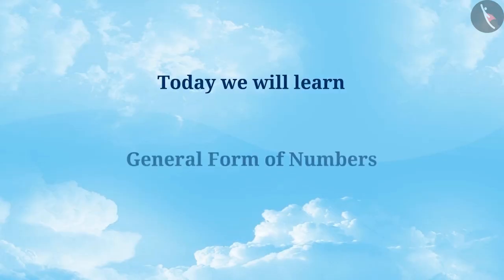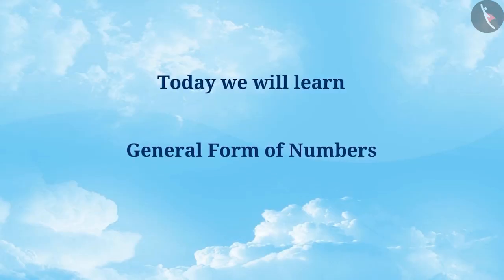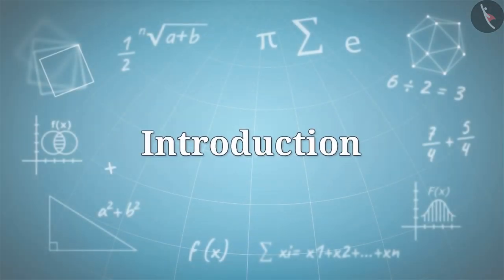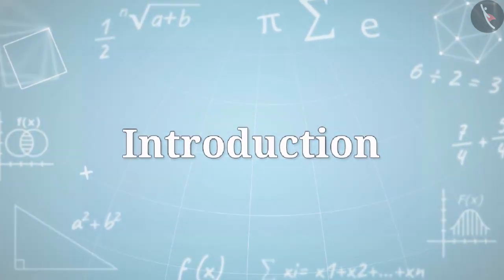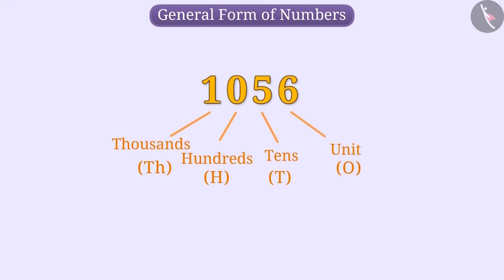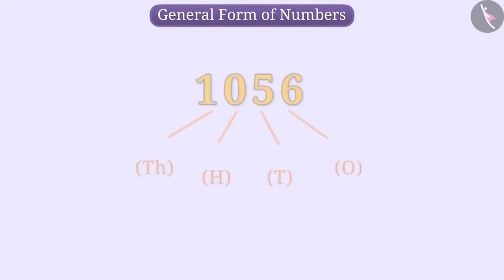Today, we will learn the general form of numbers. You will remember that every digit in the number has its own place. Can you tell at which place are 3 and 5 in the number 35?